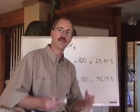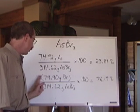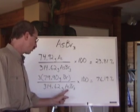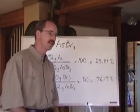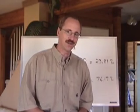There's three bromines, so it's 3 times 79.90, divided by the total molar mass of the compound again, times 100, gives you 76.19. You add those two numbers together, you better get yourself 100%. You're welcome.